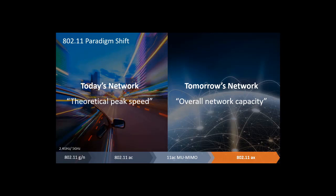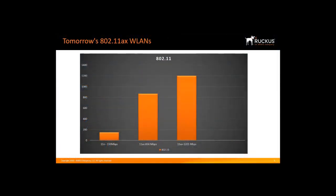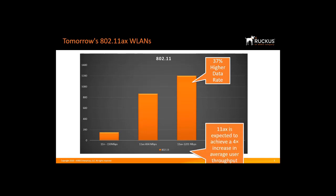The IEEE standard is currently in development and is expected to be publicly released in 2019. For 802.11n, the maximum theoretical speed was 150 megabits per second per stream. 11ac increased this to a theoretical speed of 866 megabits per second per stream, which was over a 6-fold increase. 11ax will increase the speed up to 1201 megabits per second. Though the nominal data rate is just 37% higher than 11ac, the new amendment is expected to achieve a 4 times increase to average user throughput due to more efficient spectrum utilization and improvements for dense deployments.